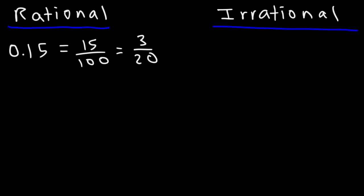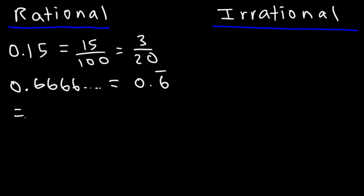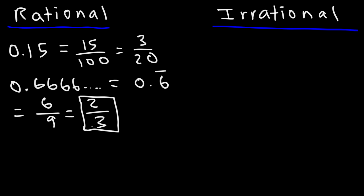Now what about repeating decimals? For instance, if we have 0.6666 repeating, which we can write as 0.6 with a line on top — is that rational or irrational? 0.6 repeating is 6 over 9, which you can reduce to 2 over 3 if you divide by 3. So repeating decimals are rational numbers. Another example is 0.2 repeating, which is 2 over 9.